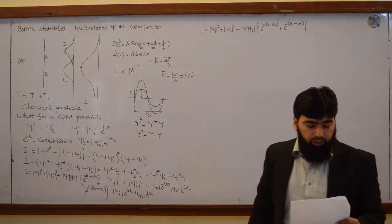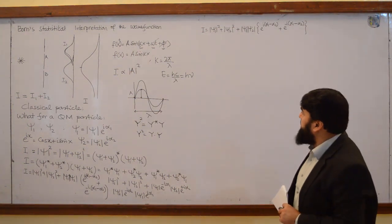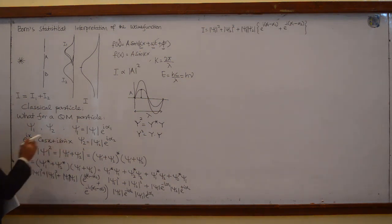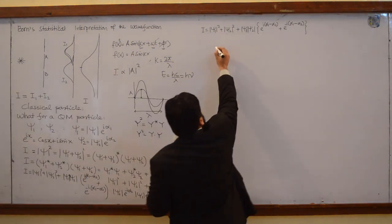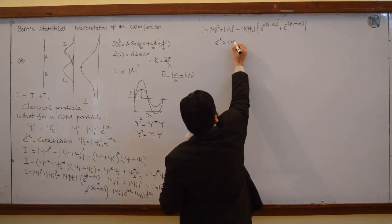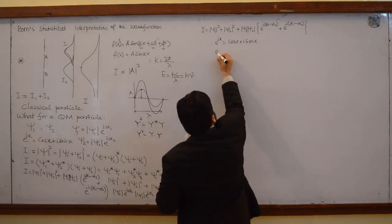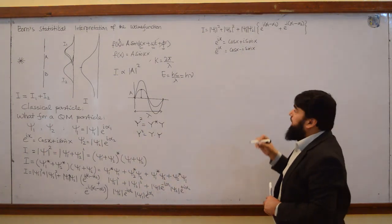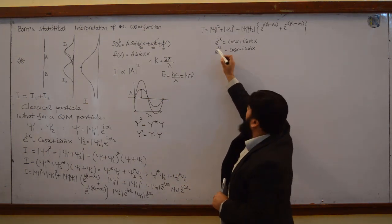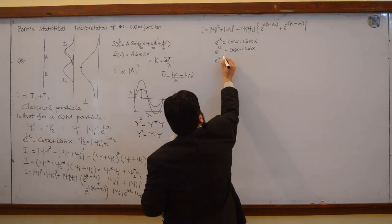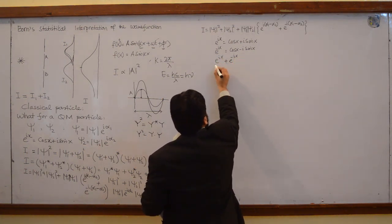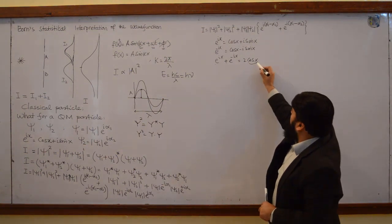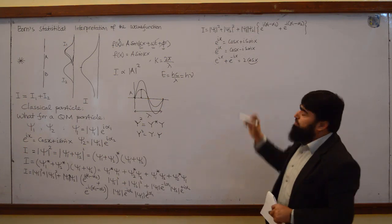You know about this relation. e to the power ix is cos x plus i sine x. What about e to the power minus ix? Cos x minus i sine x. If I add up the two, then e to the power ix plus e to the power minus ix equals 2 cos x. The sine terms cancel, so cos x equals (e^ix + e^(-ix)) divided by 2.